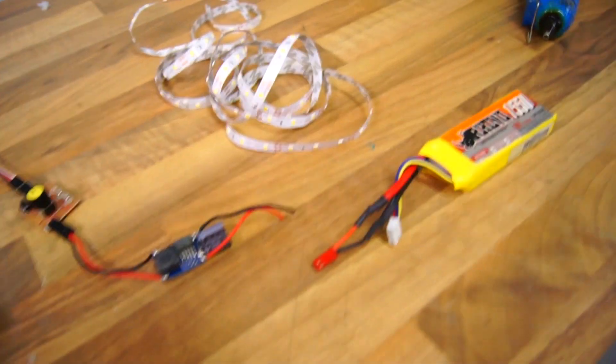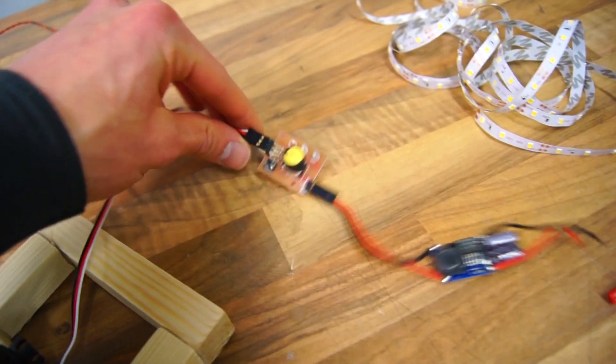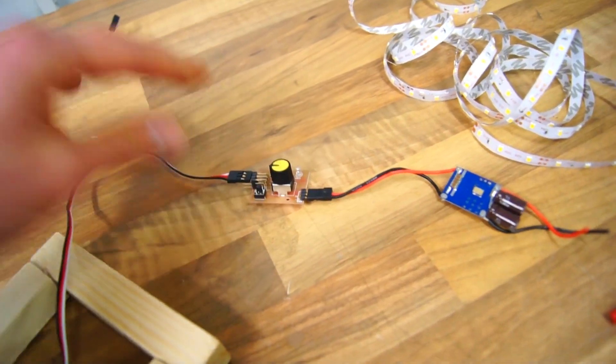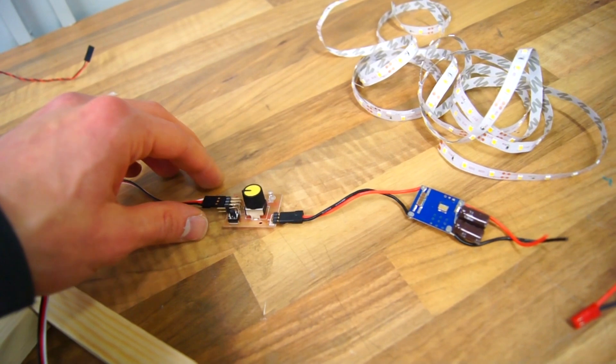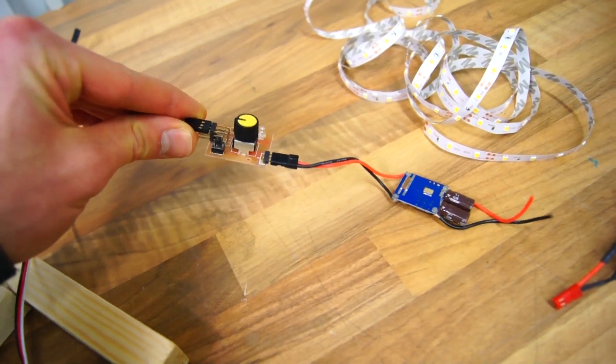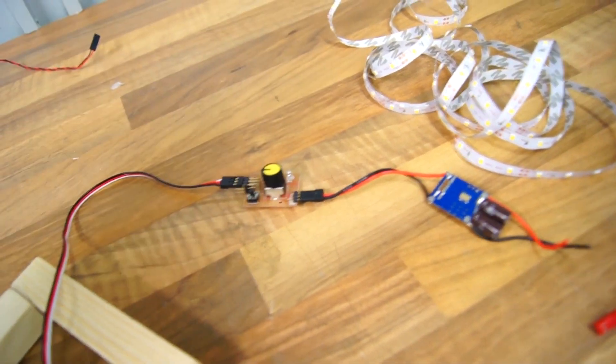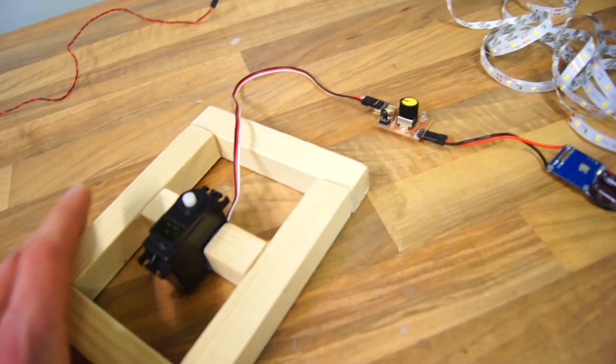So basically what you need regarding electronics is a servo tester and again I will link all these down below in the description so take a look there. So this is the servo tester, it's a really cheap way of controlling the servo.